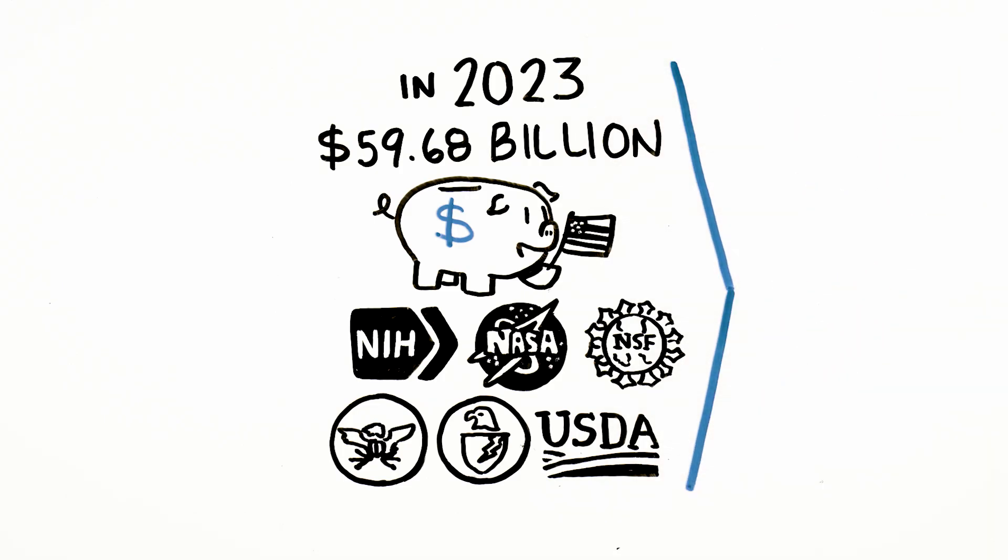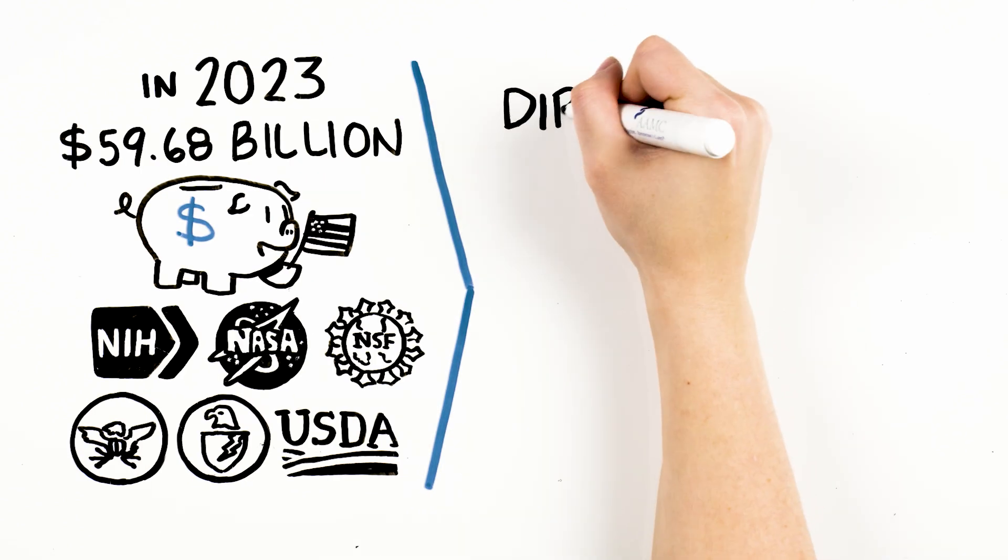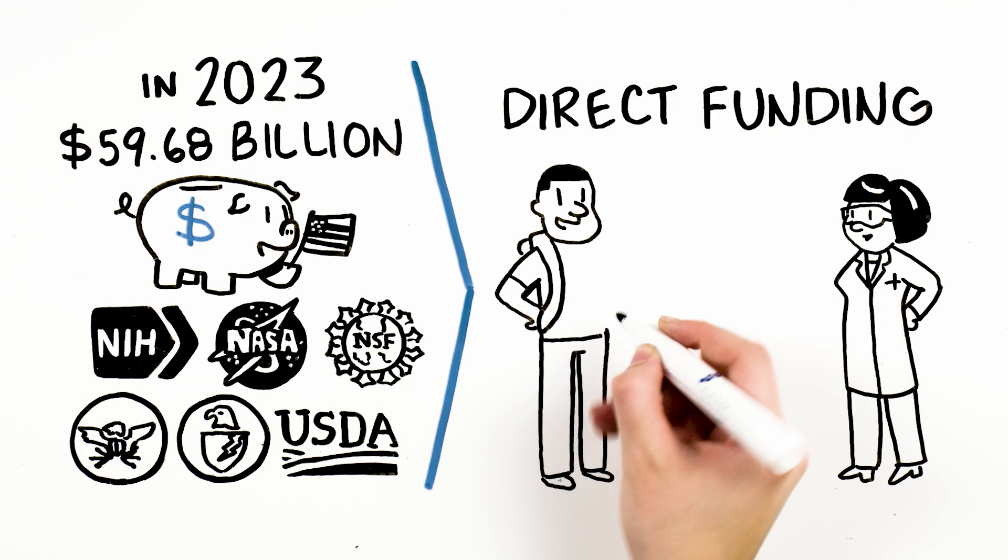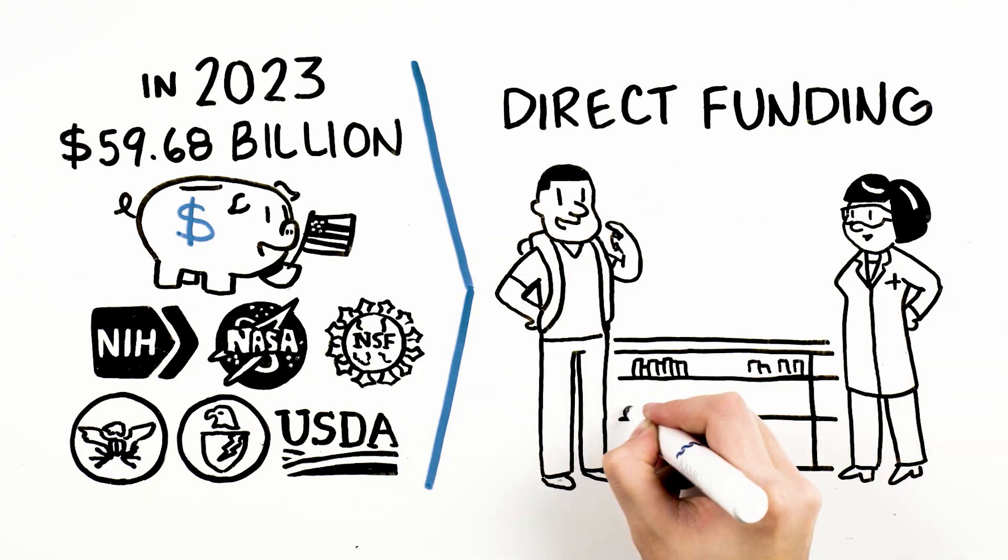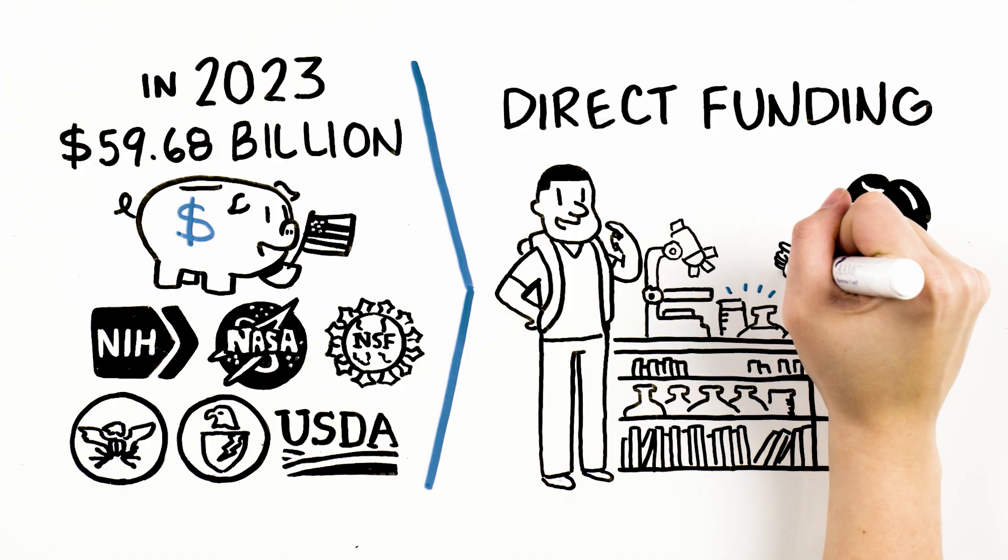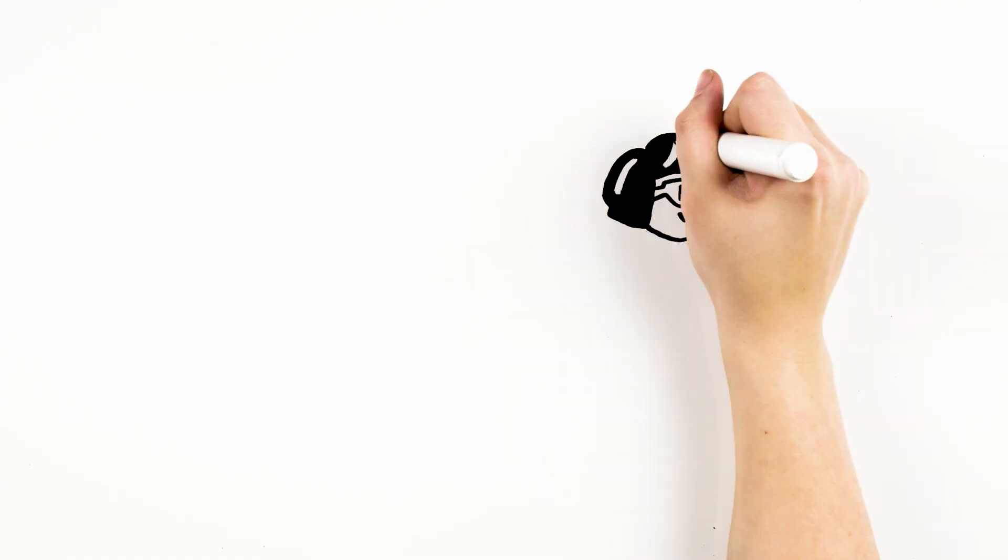This funding comes in two forms. The first is direct funding. Direct funding pays for research personnel salaries, supplies, project-specific equipment, and other costs specifically associated with performing and sharing research.